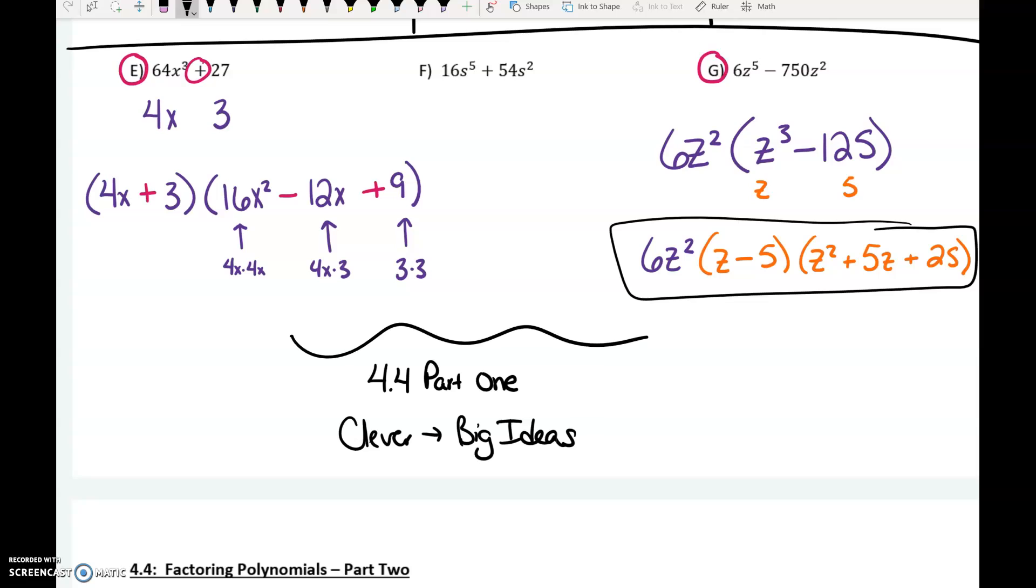Your assignment is in Big Ideas. Remember to get there, you go through Clever and then click on Big Ideas. Find 4.4 Part 1. There are unlimited answer clicks, so as you're typing your answers in, you can check your answer and see how you're doing as you're working on the assignment. Thank you.